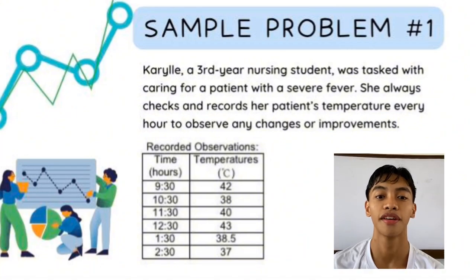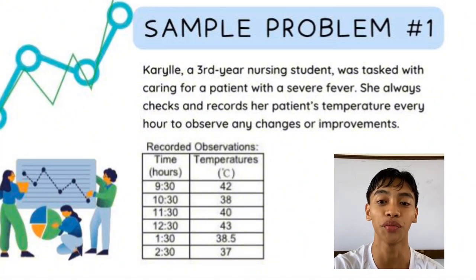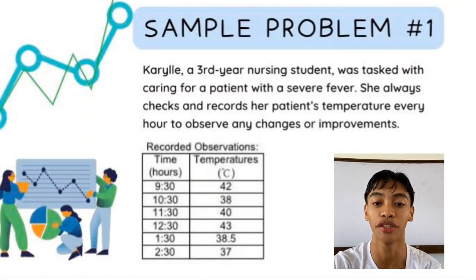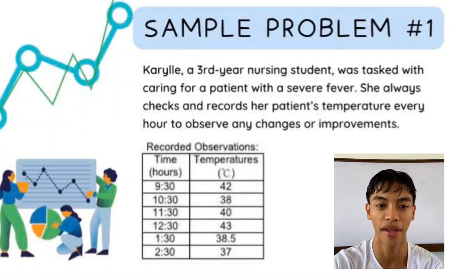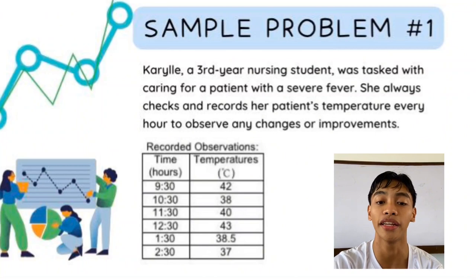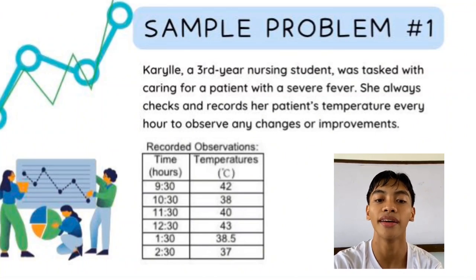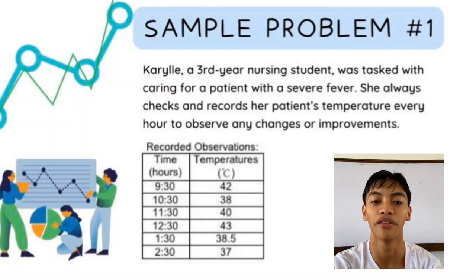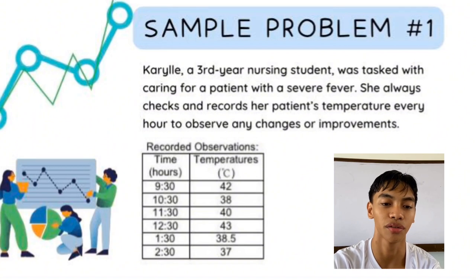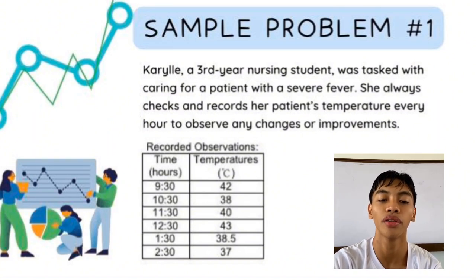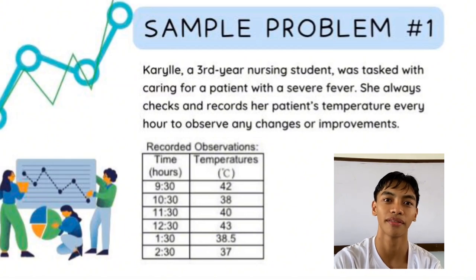Sample problem number one: Carla, a third-year nursing student, was tasked with caring for a patient with severe fever. She checks and records the patient's temperature every hour. The recorded observations are: 9:30 — 42°C, 10:30 — 38°C, 11:30 — 40°C, 12:30 — 43°C, 1:30 — 38.5°C, 2:30 — 37°C. Questions: What was the highest temperature? What time did the patient's condition become critical? How many times did the temperature rise? From the highest temperature, how many degrees did it drop before returning to normal?